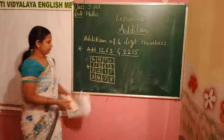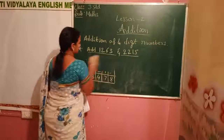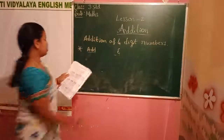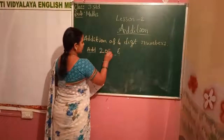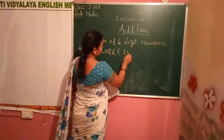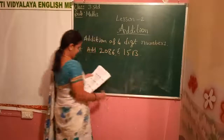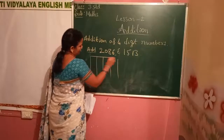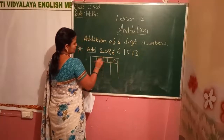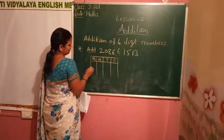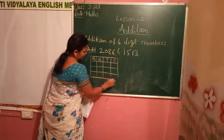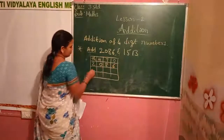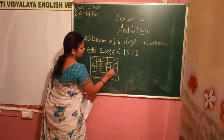Second example: Add 2,086 and 1,513. Again you have to make a column — ones, tens, hundreds, and thousands. Write 2,086 and 1,513 in the column.